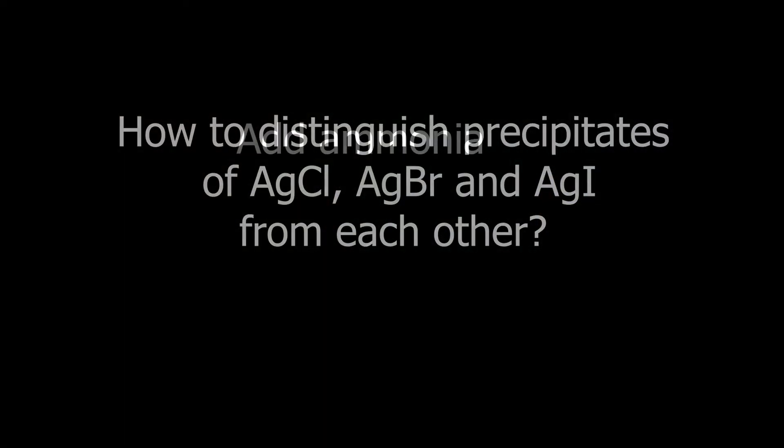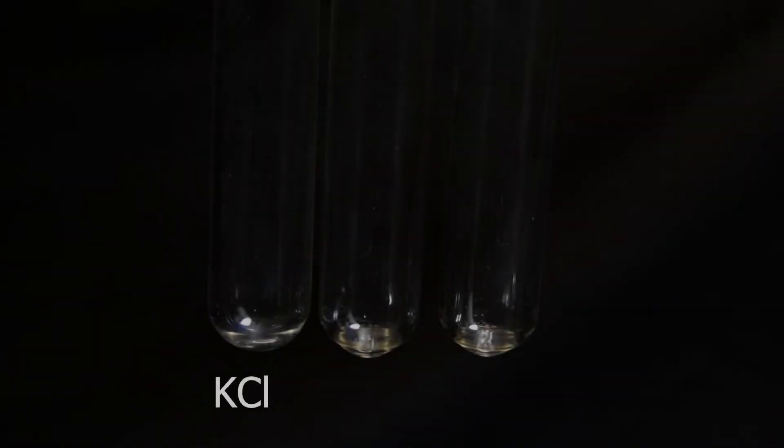We add ammonia. The colors of silver halides intensify down the group, and solubility of silver halides in ammonia decrease down the group.